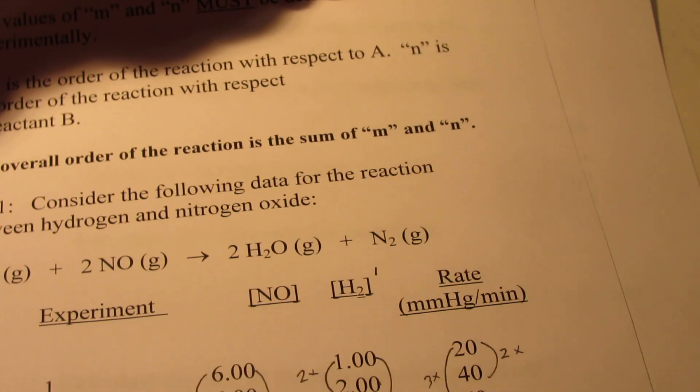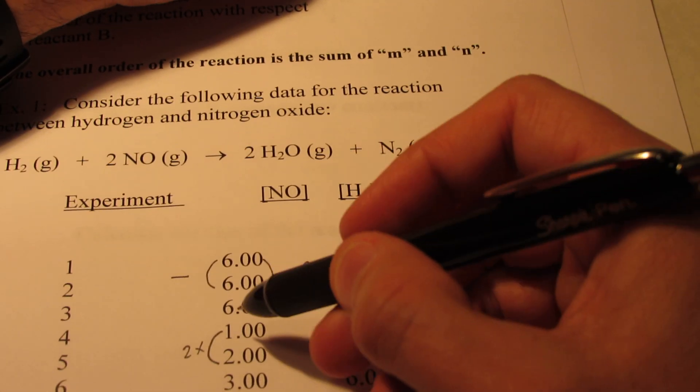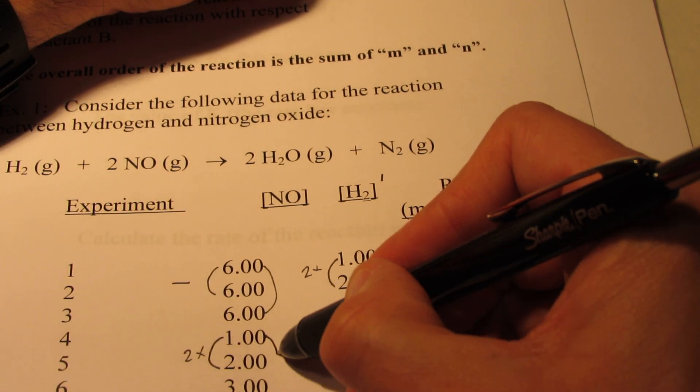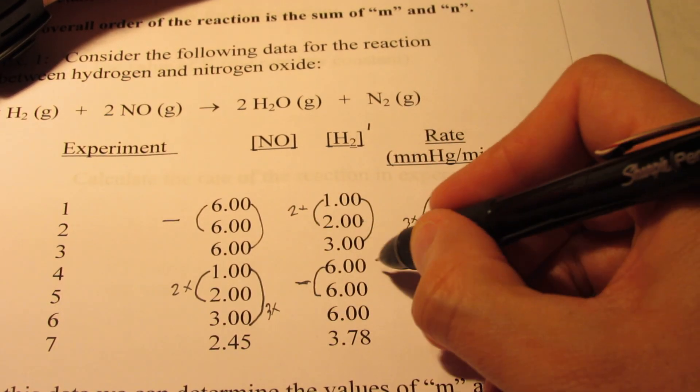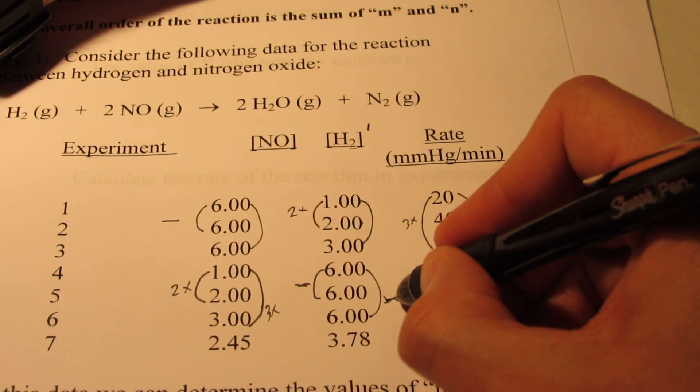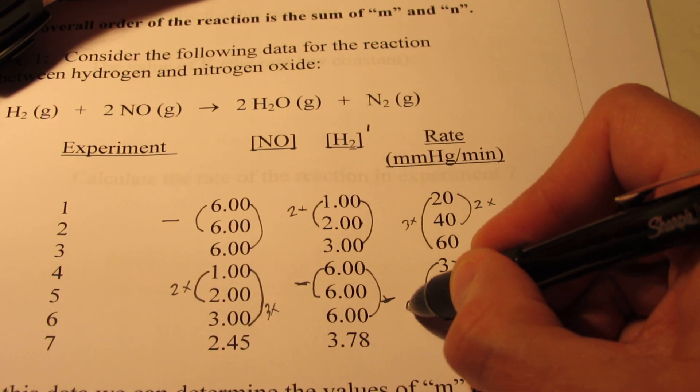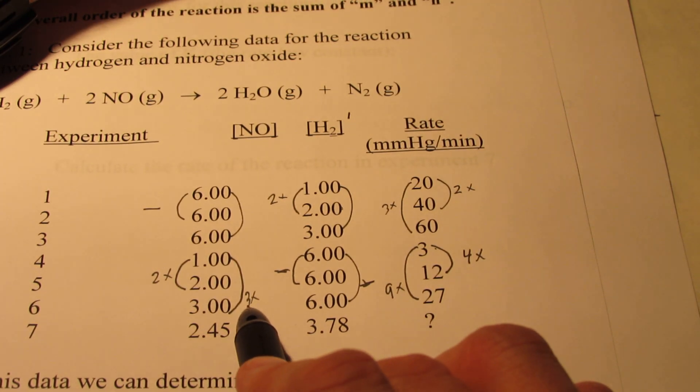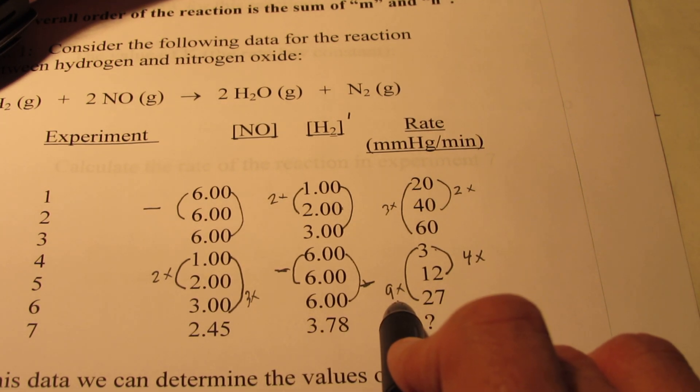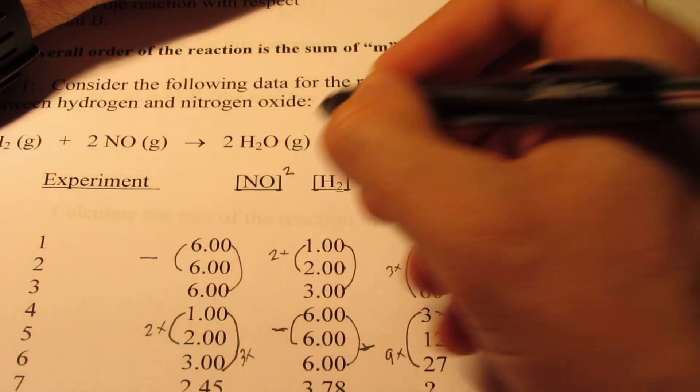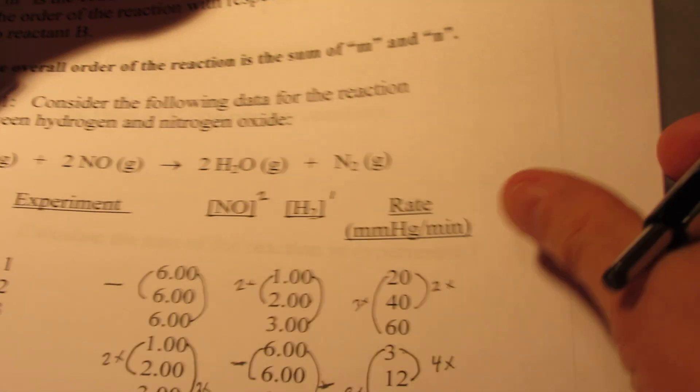Let's take a look at a couple more experiments. Let's look at between 4 and 6. Here, I'm going from 1 to 3. I'm tripling the NO, while H2 is constant. And the rate goes up nine times. So the concentration was tripled. The rate, nine-tupled, once again telling us that the NO is second order.